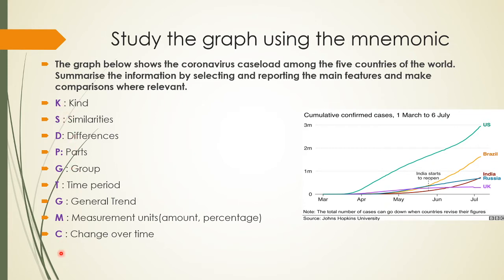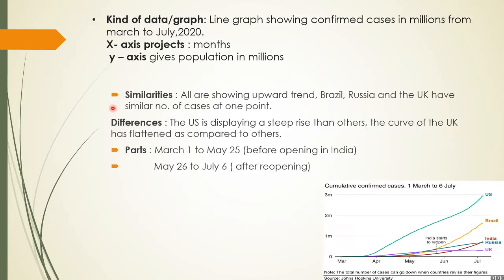Using the mnemonic, we will study the graph and jot down the main points. First is K, that is 'Kind' — kind of data or graph. This is a line graph showing confirmed cases in millions. On the Y-axis you can see the population in millions, and on the X-axis is the time period in months, from March to July 2020. So the X-axis projects months and the Y-axis gives the population in millions.